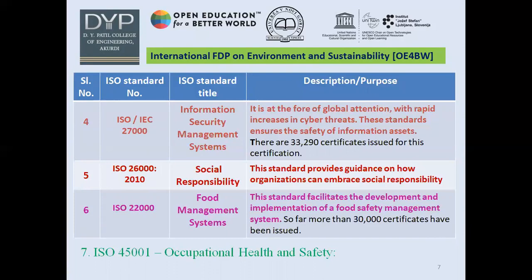The next one is ISO 26000, developed in 2010, meant for social responsibility. This standard provides guidance on how organizations can embrace social responsibility. Next is ISO 22000, developed for food management systems. This standard facilitates the development and implementation of food safety management systems. So far, more than 30,000 certifications have been issued.